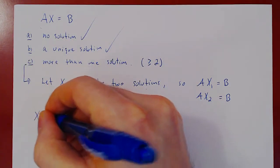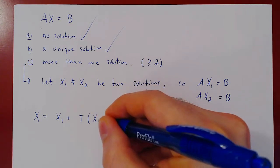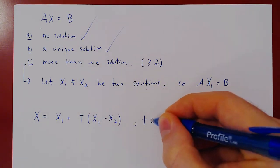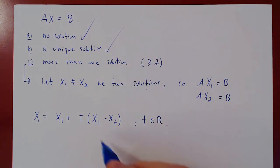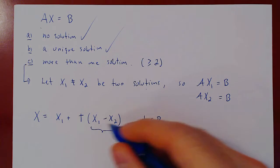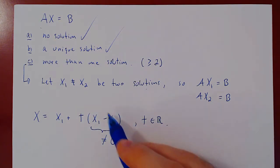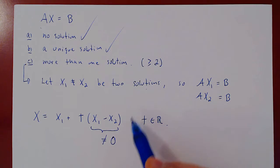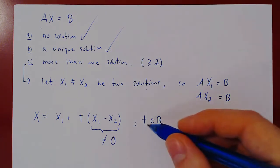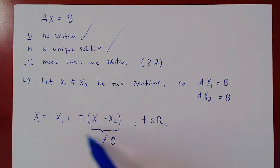Consider x being equal to x1 plus t times x1 minus x2, where t is any real number. Because x1 is not equal to x2, then x1 minus x2 is not the zero column matrix, and so as we let t vary over all real numbers, this will give an infinite number of column matrices — an infinite number of possible values of x. Let's prove that for any choice of t, this is a solution to the equation, which will prove that we have indeed constructed an infinite number of different solutions to the linear system.